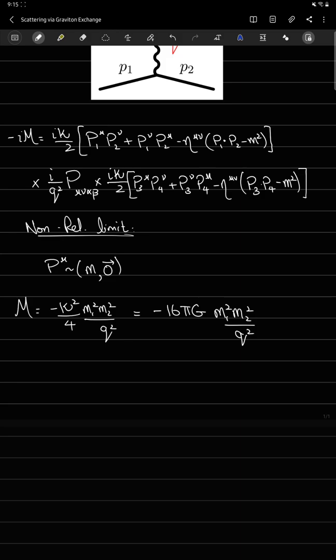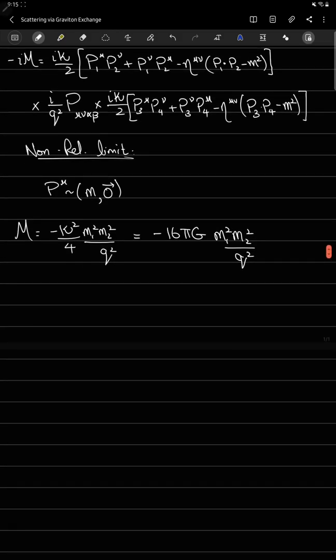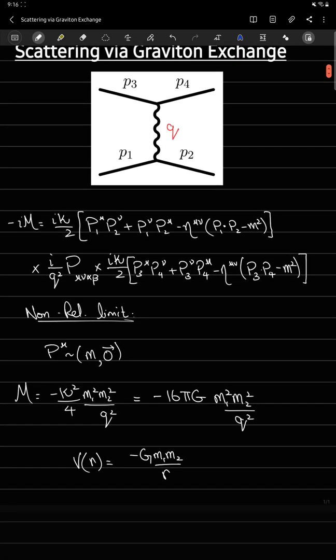This thing is a bit familiar because if I take a Fourier transform of this expression, what I get is something like minus G m1 m2 over r. We all know what this is—this is the non-relativistic Newton's potential. So we can see that in the non-relativistic limit we arrive at the result that we should expect, Newton's potential.